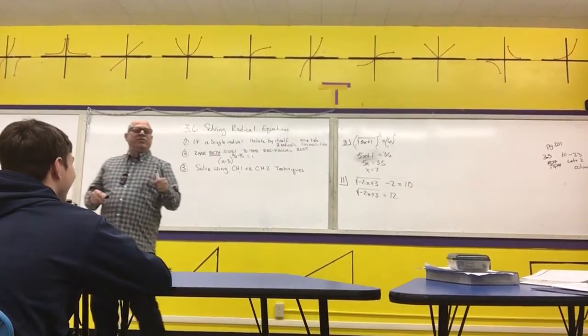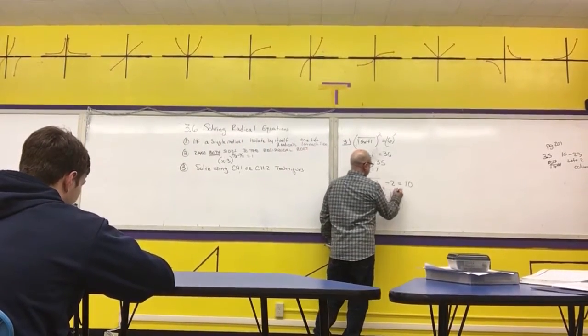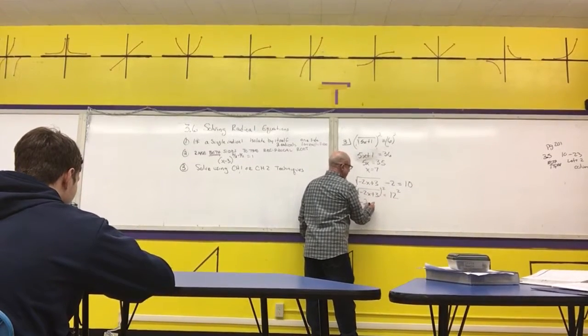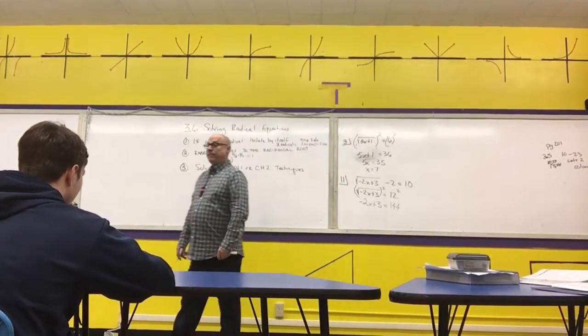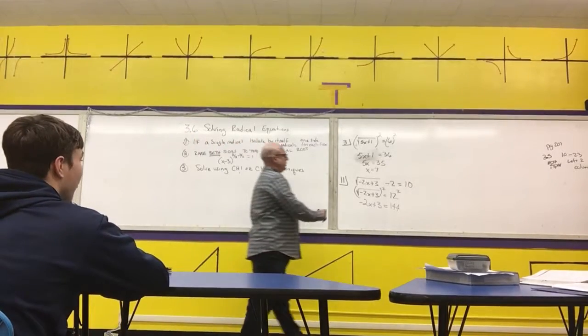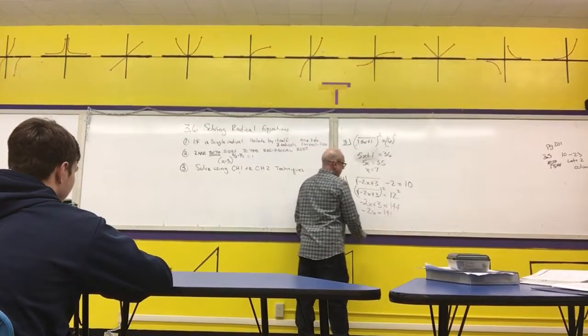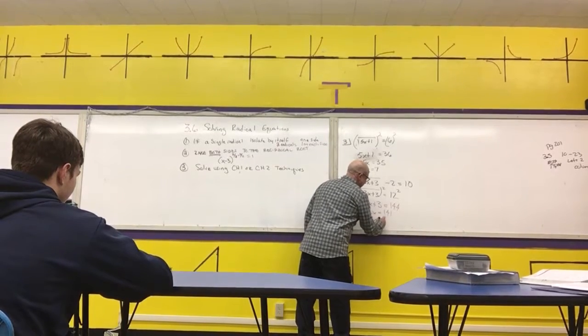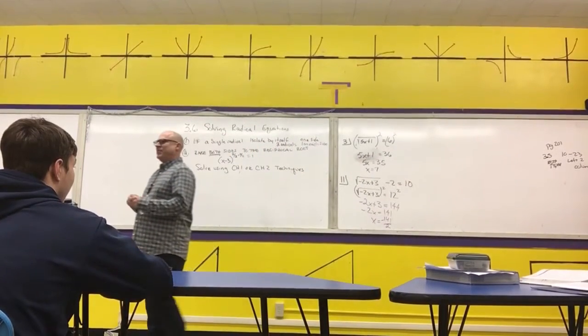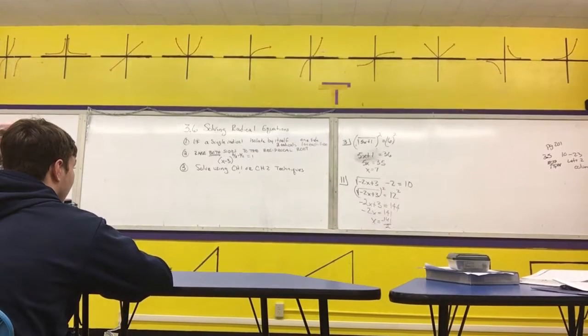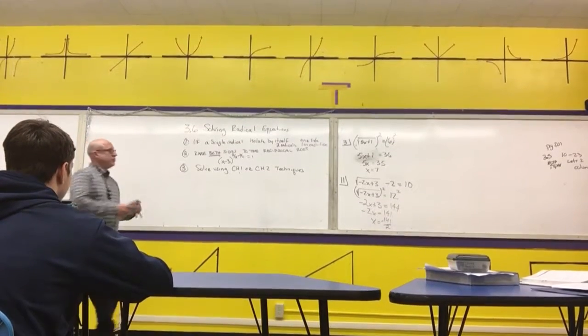So I have the square root of negative 2x plus 3 equals 12. That is a square root. So I need to raise both sides to the second power to get rid of the square root. On the left, I have negative 2x plus 3. On the right, I have 144. Next step. Subtract 3. Last step. Divide by negative 2. X equals negative 141 halves. Your book would give you negative 70 and a half. My answer that I'm expecting is negative 141 halves. Any questions on that?